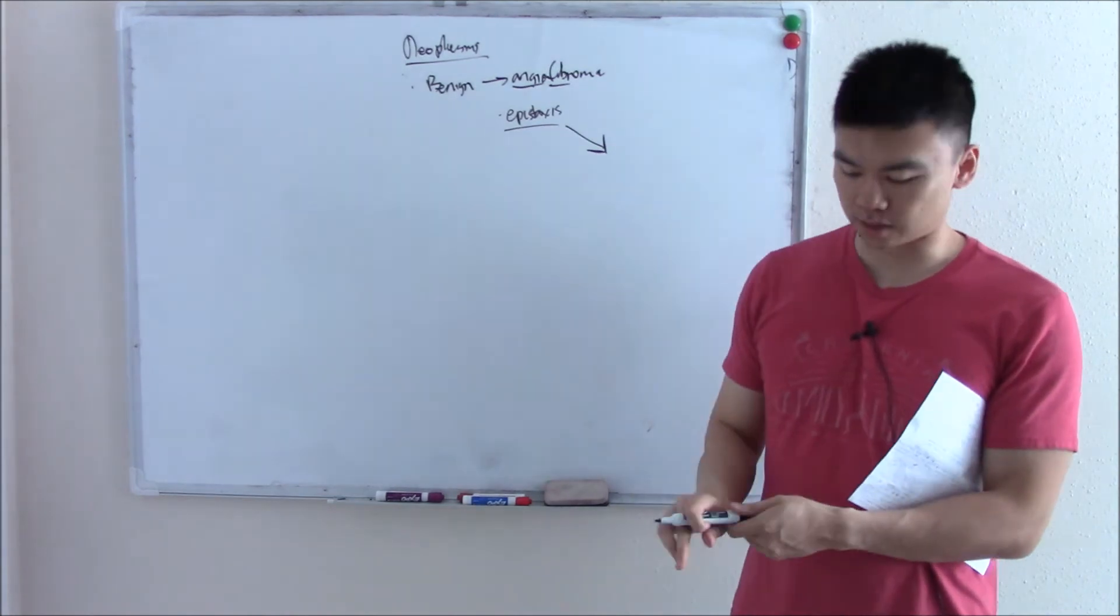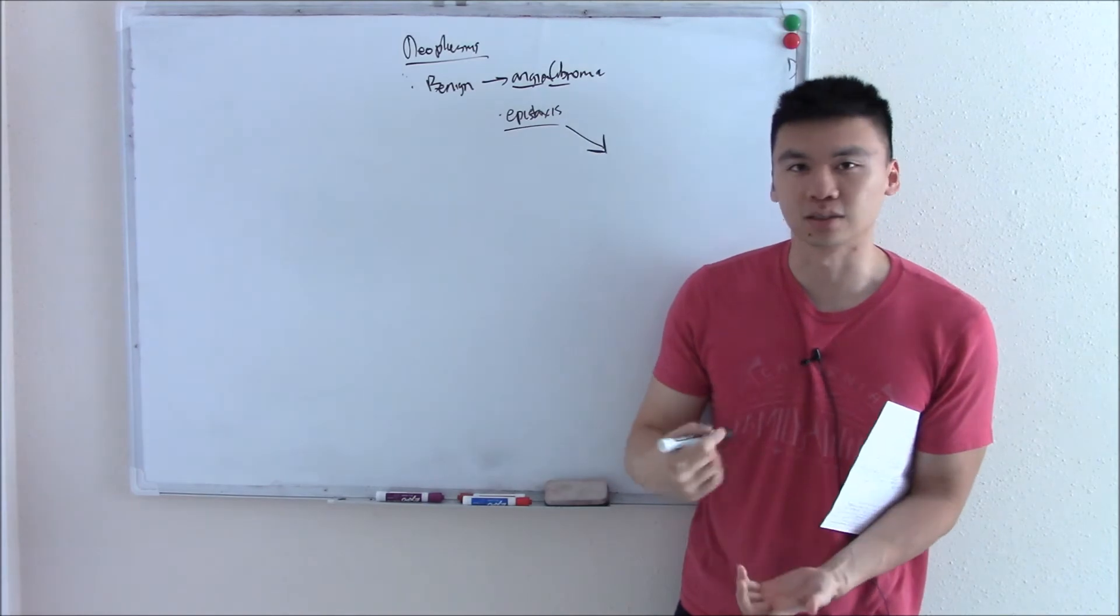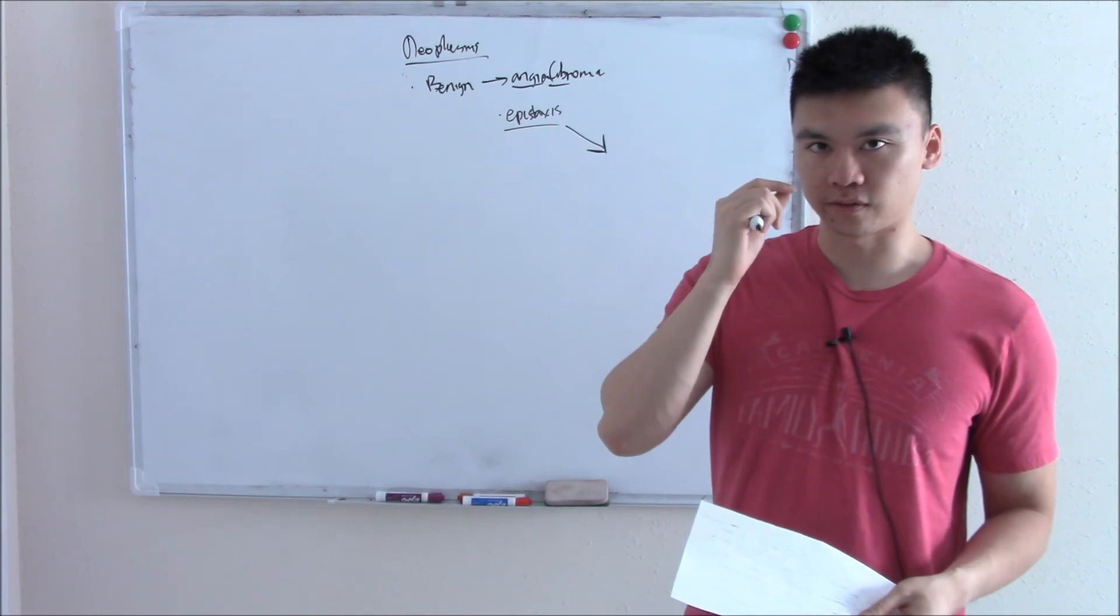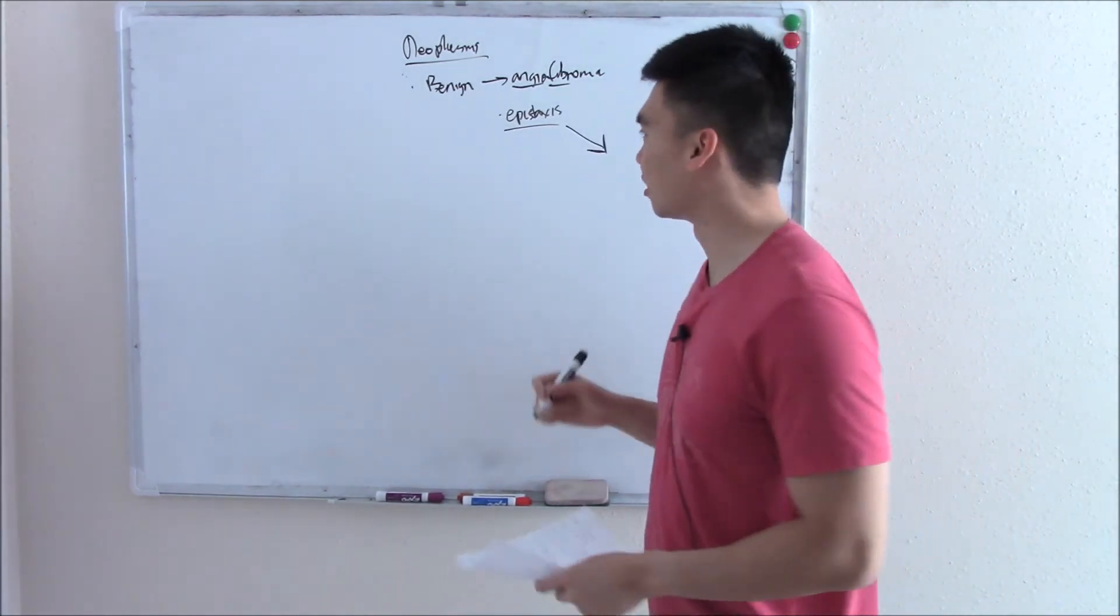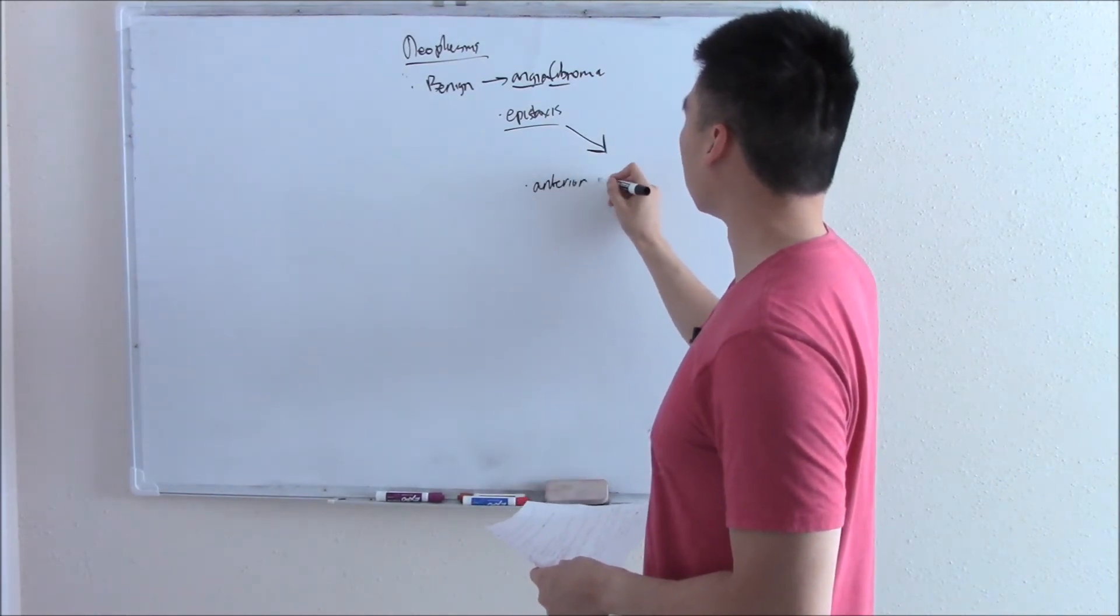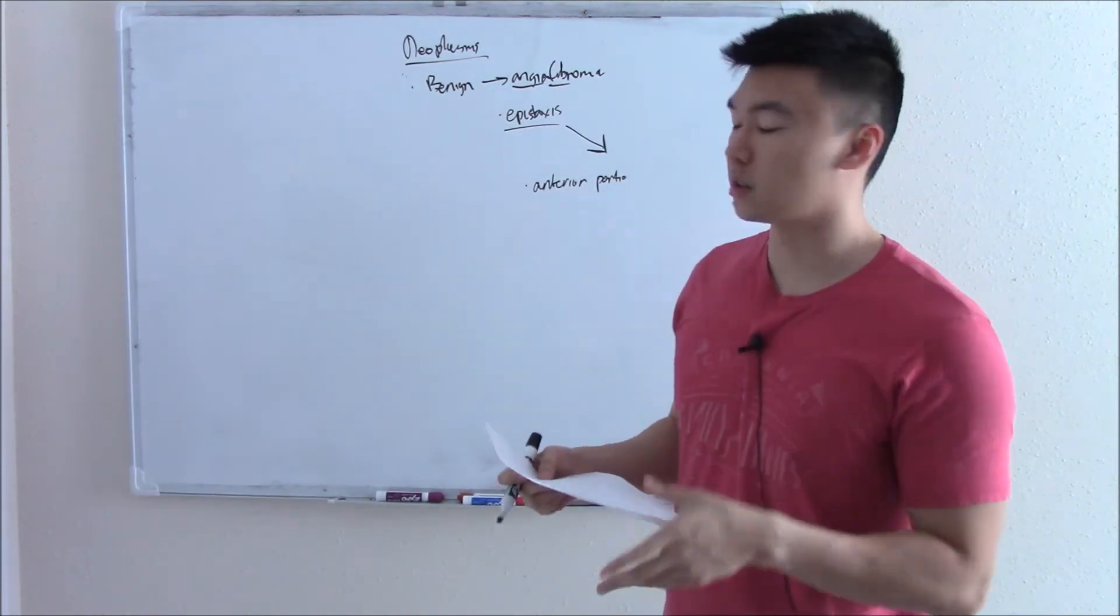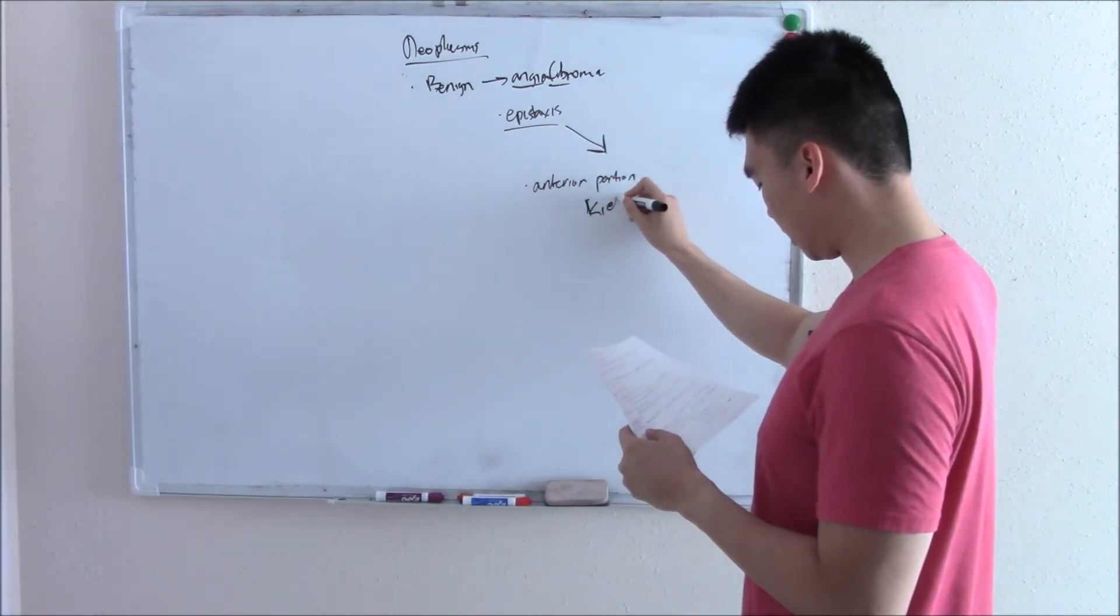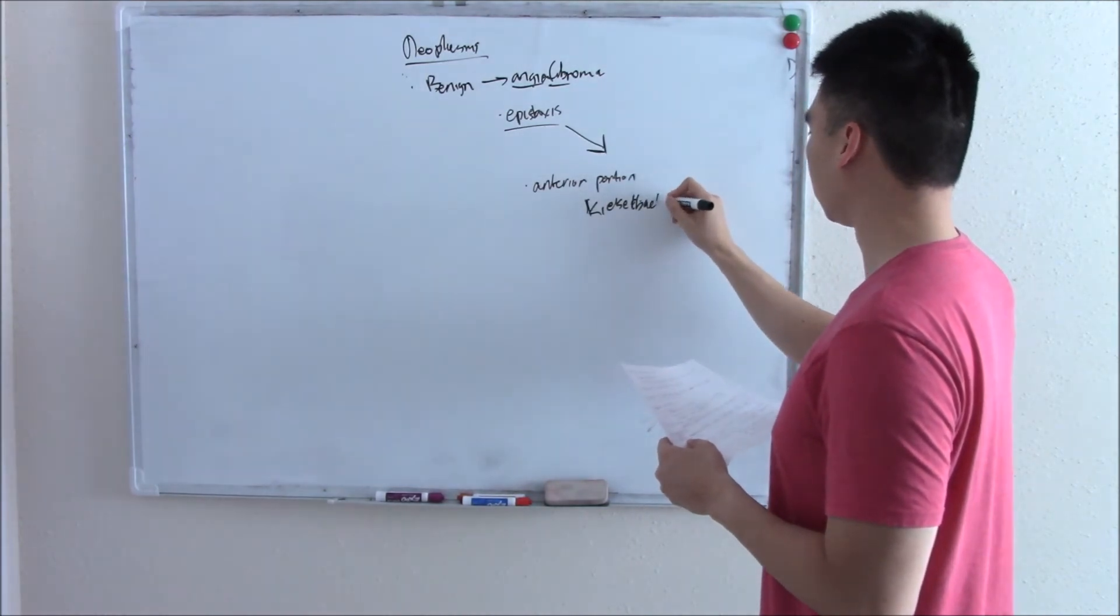Nosebleeds, incredibly common. I'd be surprised if you never had a nosebleed. You just rest, put some ice on your nose, they'll go away. Most common cause of nosebleed is by messing with your blood vessels in your nose, aka digging your nose. So don't dig your nose, people. Often in the anterior portion of your nose. So the front of your nose. When you're digging, you scrape the front of your nose. Especially these blood vessels called your Kiesselbach plexus.